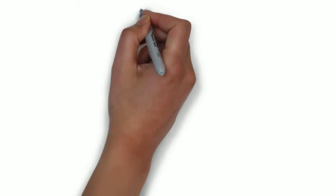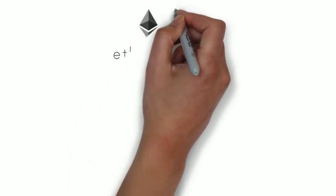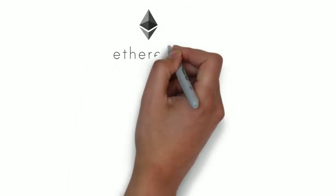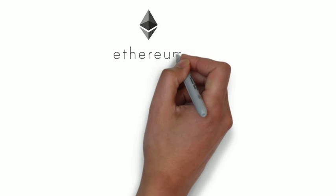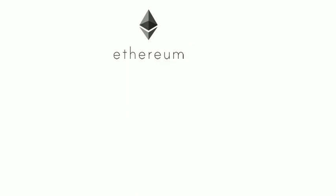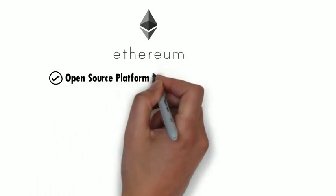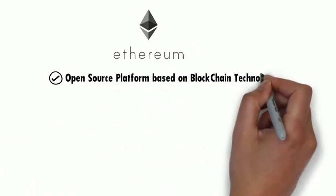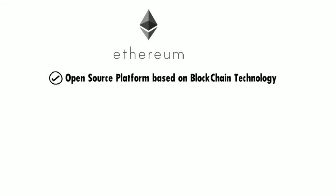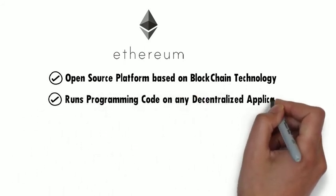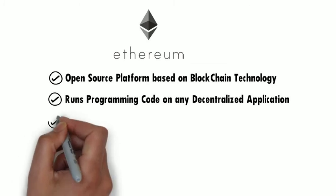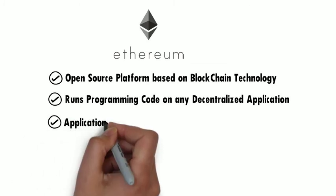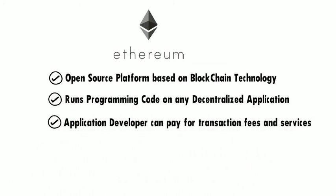3. Ethereum. Created in 2015, Ethereum is a type of cryptocurrency that is an open-source platform based on blockchain technology. While tracking ownership of digital currency transactions, the Ethereum blockchain also focuses on running the programming code of any decentralized application, allowing it to be used by application developers to pay for transaction fees and services on the Ethereum network.